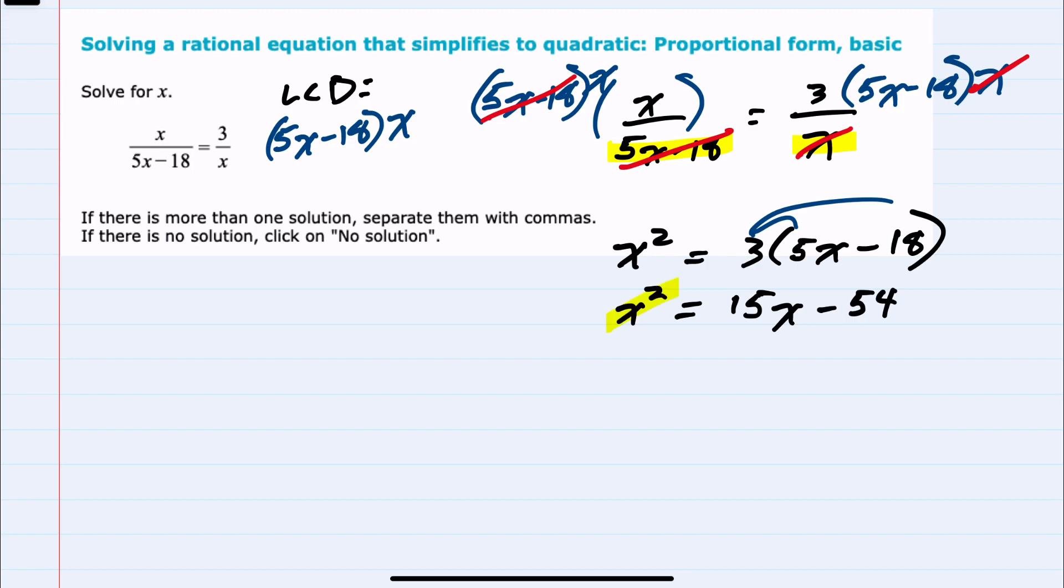And then to solve our quadratic, since we have an x squared term, I'll need to set one of these sides equal to 0. The easiest thing is to move these items on the right-hand side over to the left-hand side. So subtracting 15x from both sides and adding 54 to both sides